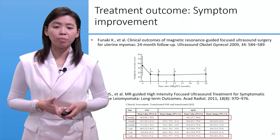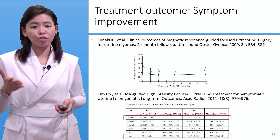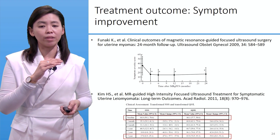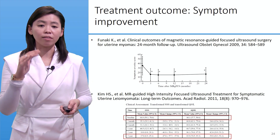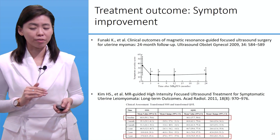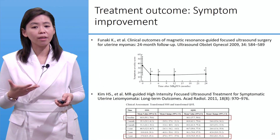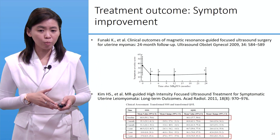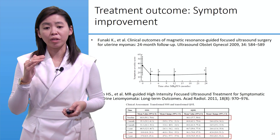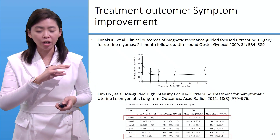Looking at symptom improvement: a study by Funaki et al. examined symptom severity score at three, six, nine months up to 24 months after treatment, showing a nice reduction at three months that remains low and durable over 24 months. A study by Kim et al. on MR-HIFU treatment of symptomatic uterine fibroids at three-year follow-up shows a high symptom severity score at baseline decreasing at each follow-up time point, remaining low at three years.